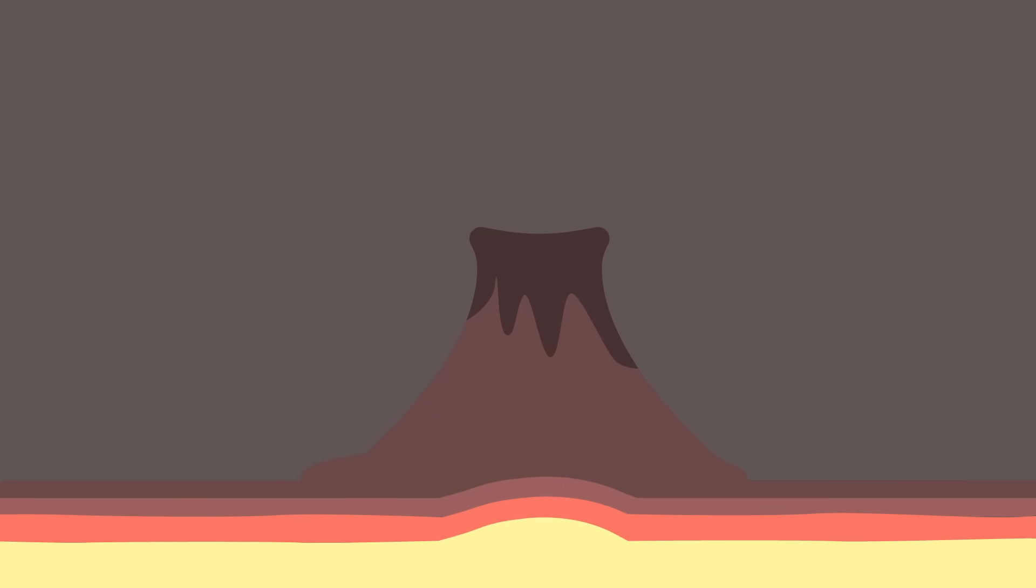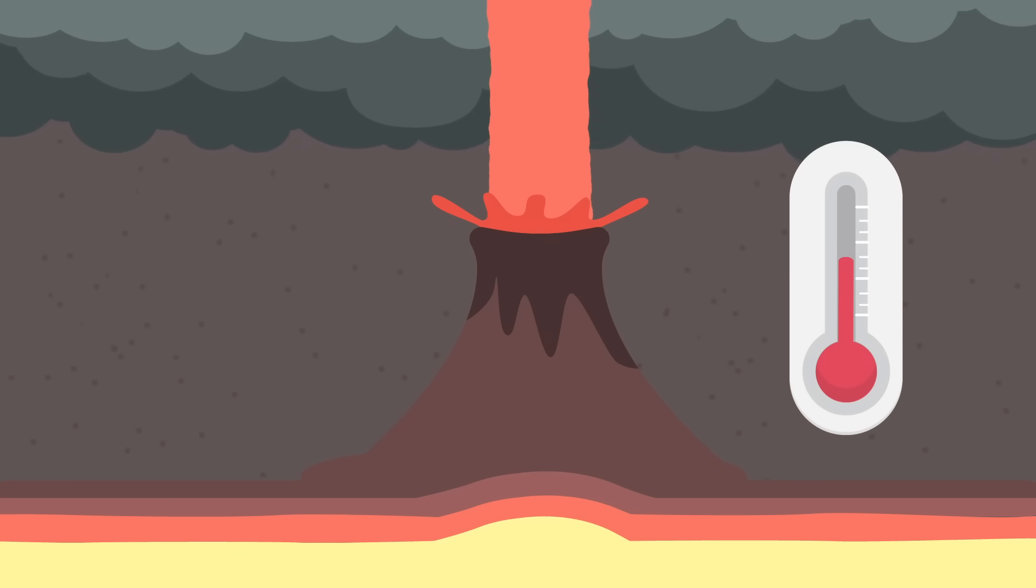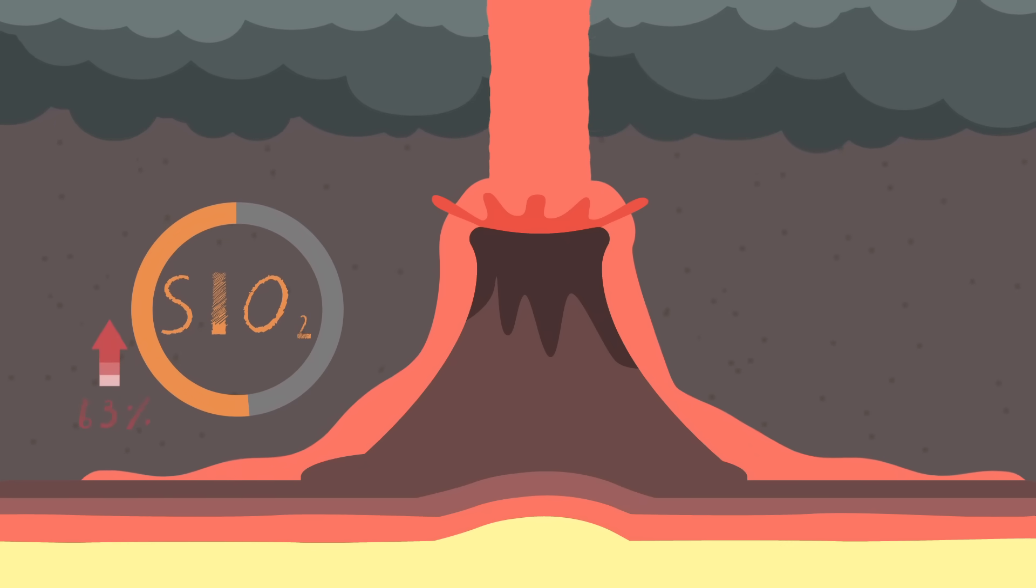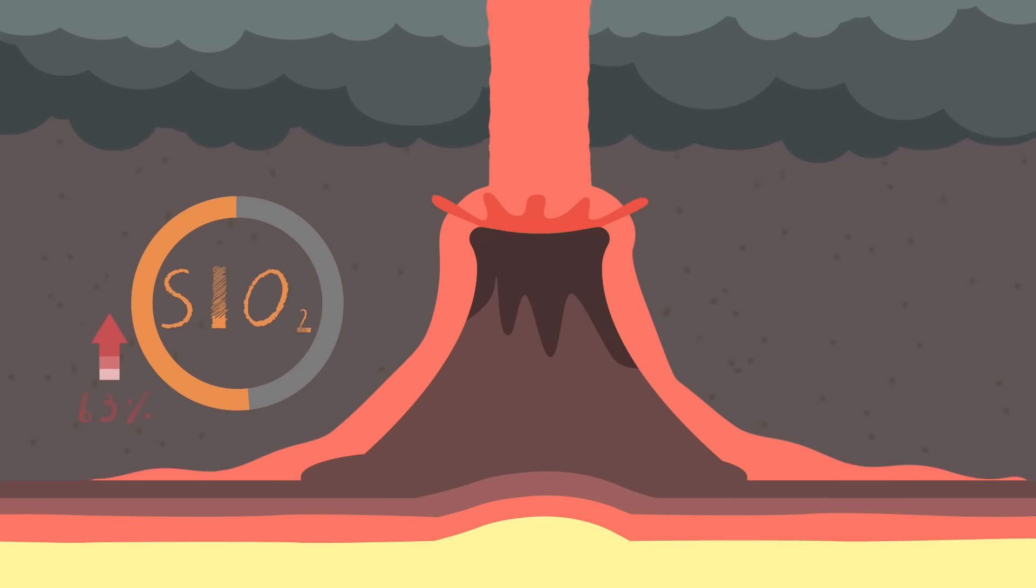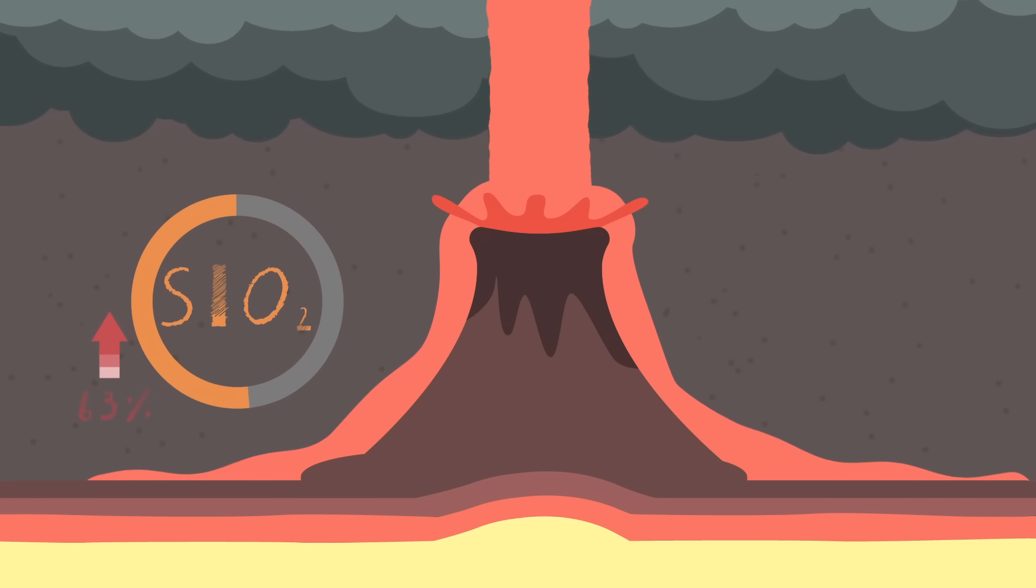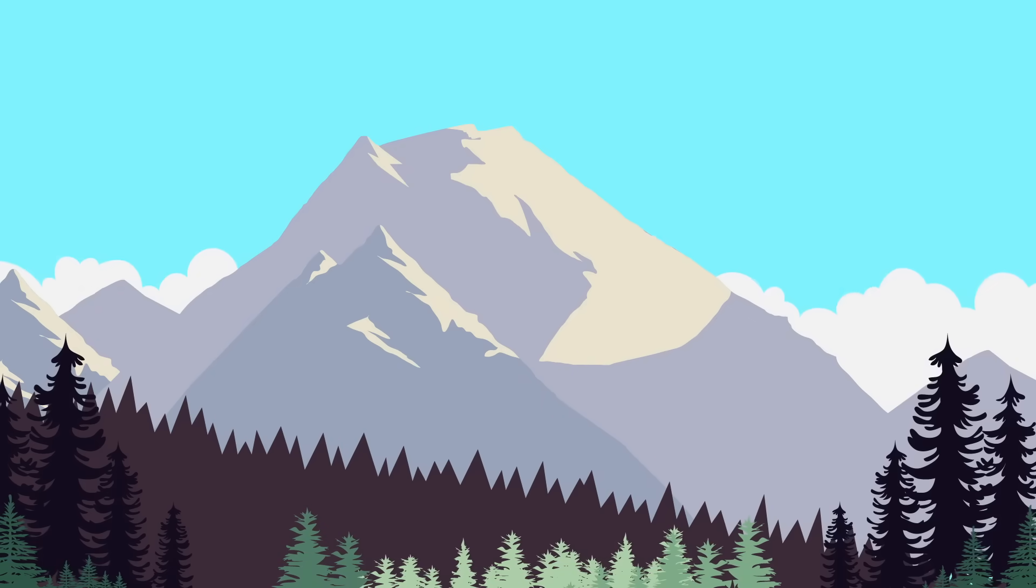Rhyolitic lava, on the other hand, has a high gas content and low temperature. As a result, it erupts with much more force than basaltic lava. Rhyolitic lava has a silicon dioxide content of 63% or higher, giving it a low fluidity and high viscosity. This type of lava creates lava dome volcanoes, like Mount Paektu in Korea.